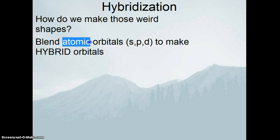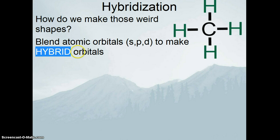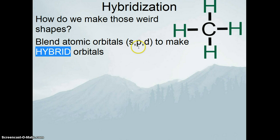We understand atomic orbitals — s, p, and d — and then there's the concept of hybrid. Remember what a hybrid is: it's a little bit of this, a little bit of that, and not purely either. A gas-electric hybrid car is not a gas car and not an electric car — it's a mismatch of both. So hybrid orbitals are a little bit of s, a little bit of p, maybe a little bit of d, making something completely different.